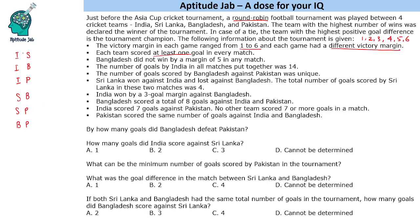Looking at the information given: the total number of goals scored by India is 14. India won by a 3-goal margin against Bangladesh, so the winning margin is 3. India scored 7 goals against Pakistan.